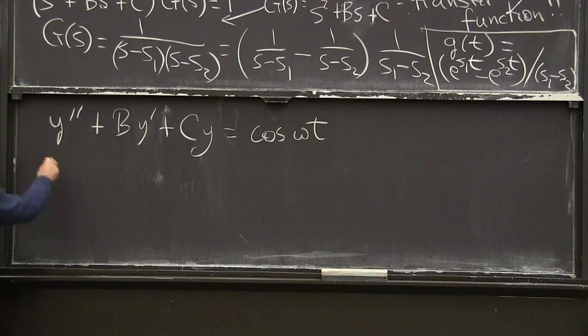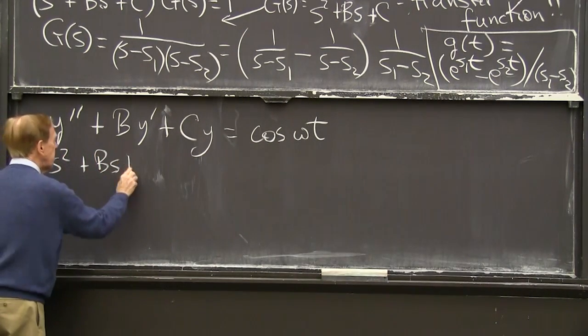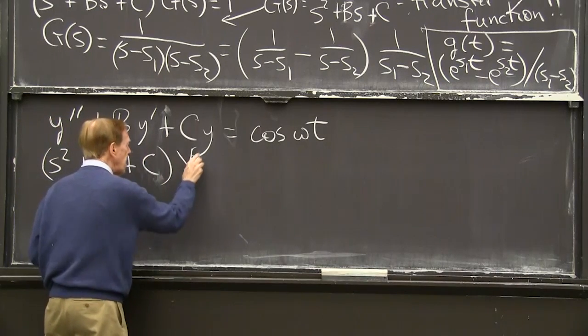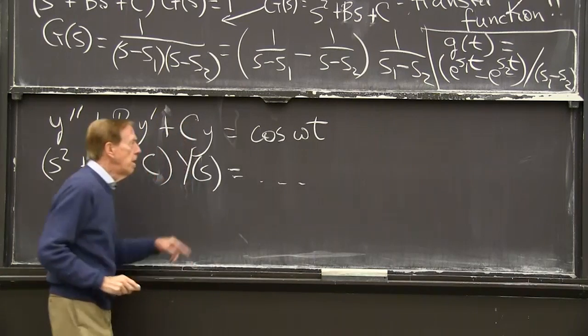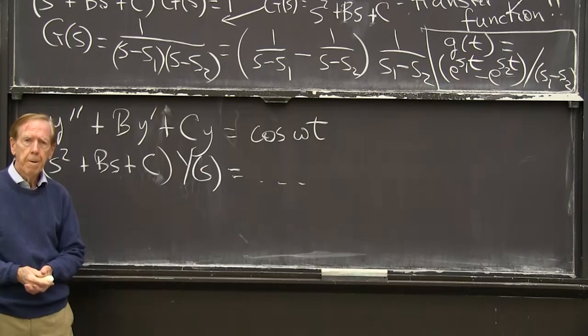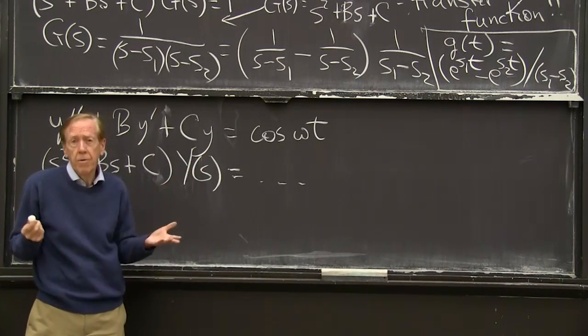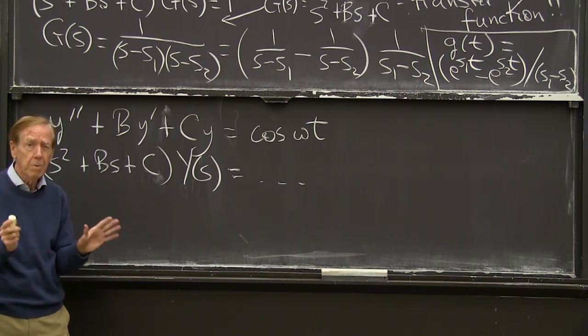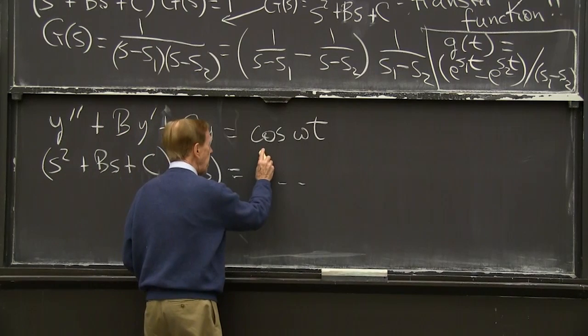So what do we need? We need the Laplace transform of that. I plan to take the Laplace transform of every term. s squared plus bs plus c will multiply. I'm transforming everything. And here I have to put the transform of that. So how will I get that? And of course, there might be a sine omega t in there. I would really like to get them both at once.